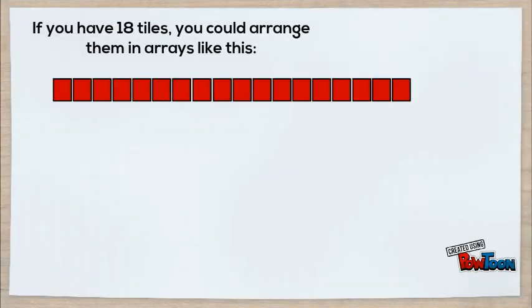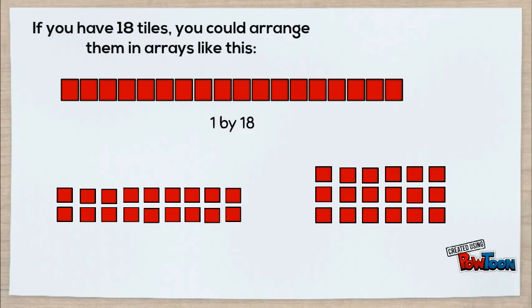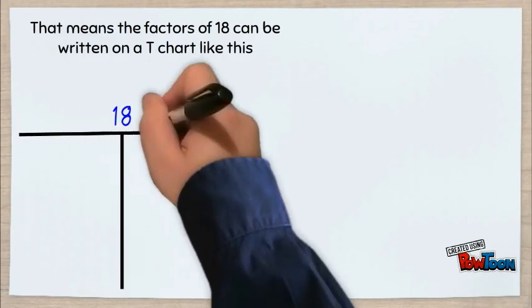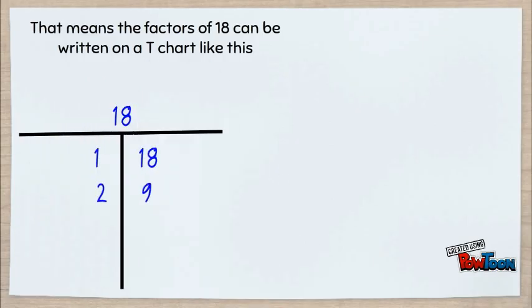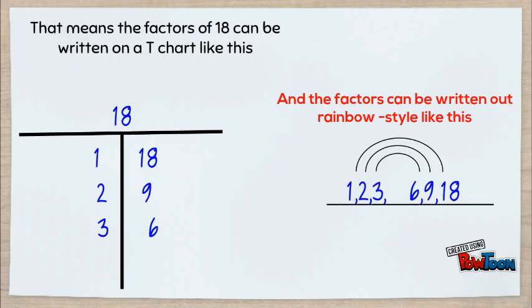If you have 18 tiles, you can arrange them in arrays like this: 1 by 18, 2 by 9, and 3 by 6. That means the factors of 18 could be written on a t-chart like this. And the factors can be written out rainbow style like this.